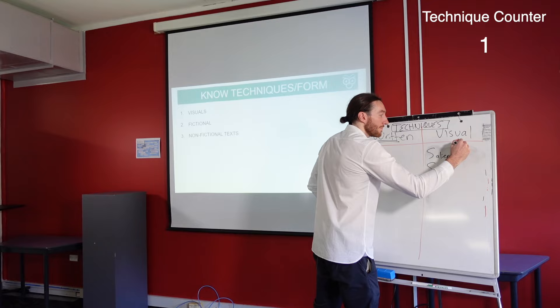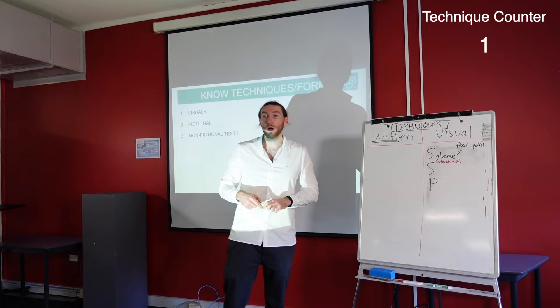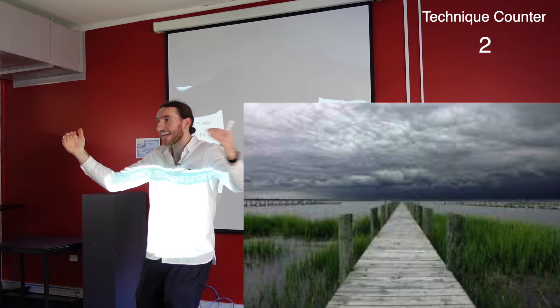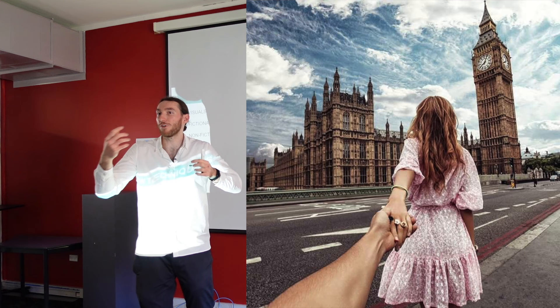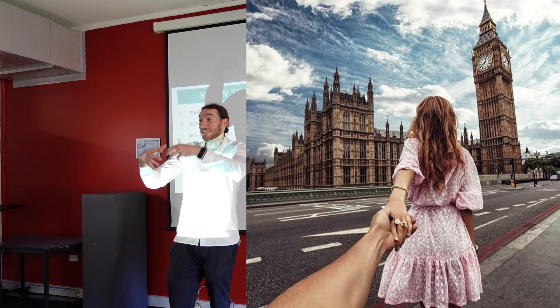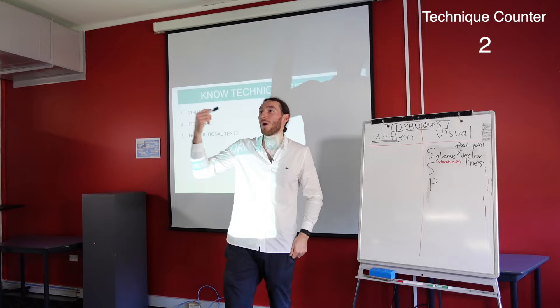If something is salient, it stands out. What could make something stand out? Vector lines. Vector lines are the lines in an image that take you into the main part of the image. The vector line could be an arm extending out — if you see a photo where the camera shows the arm going out like that, then that is the vector line taking you to what is salient. When you speak about salience, you have to say what makes it salient — it might be the vector line.